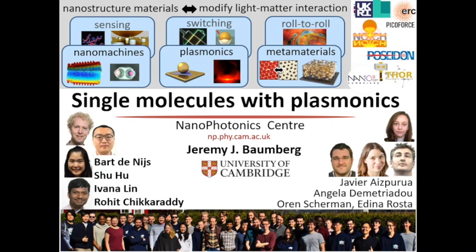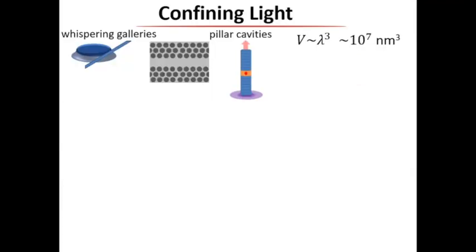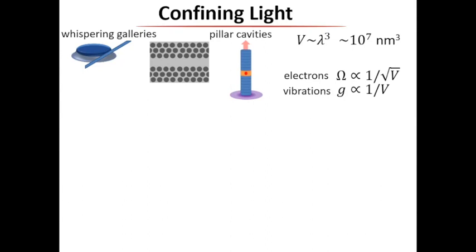When we confine light with dielectric structures of any sort, it's very nice, but the real problem is that the actual volume you're going to confine the light to is always going to be on the scale of the wavelength in the material cubed. That's embarrassingly large if you're a nanophotonics person. This is a real problem if you're trying to interact with small numbers of quasi-particles - phonons or electrons - because all those interactions scale as the optical volume to some power.